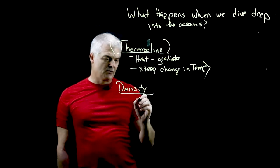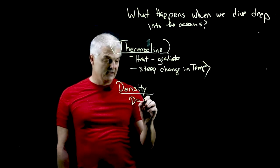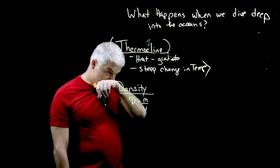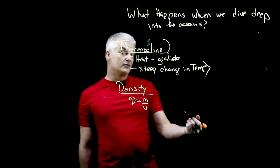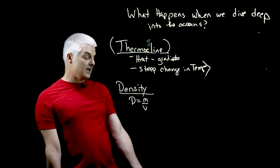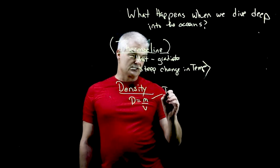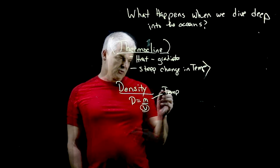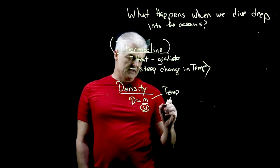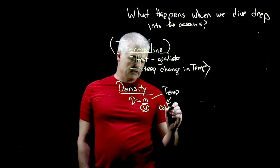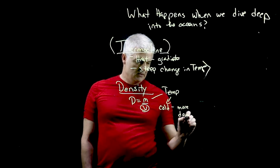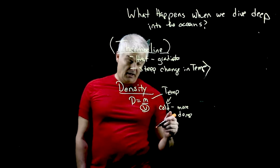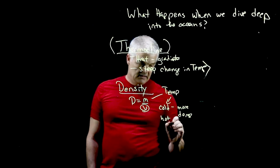Now density is, if you recall, D equals M over V. Density is mass divided by volume. Because you see, the density of seawater varies. It's not always the same density. And it has to do with the temperature. So as it turns out, the more dense is the cold. So cold saltwater is more dense. And hot saltwater is less dense.